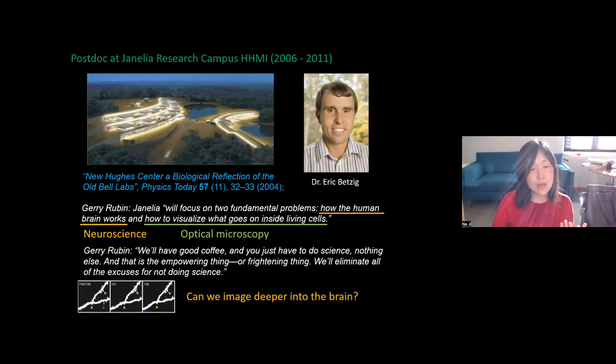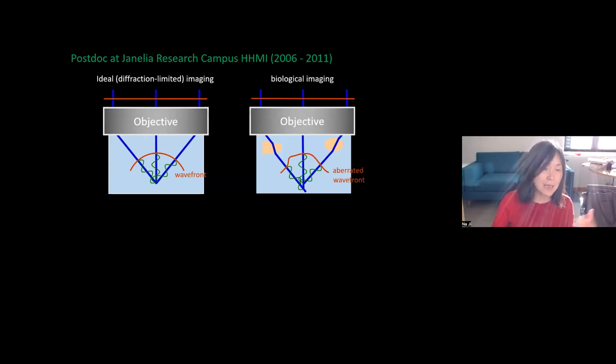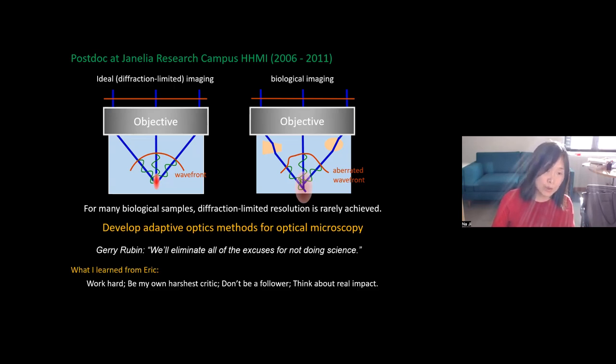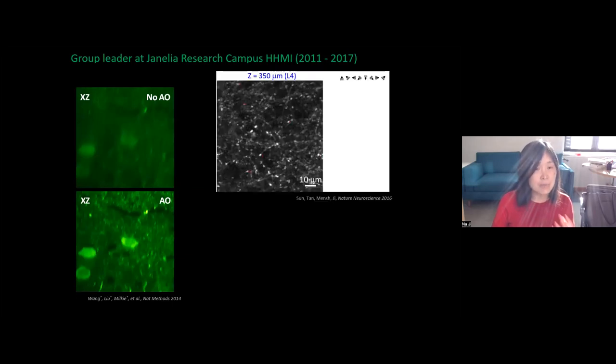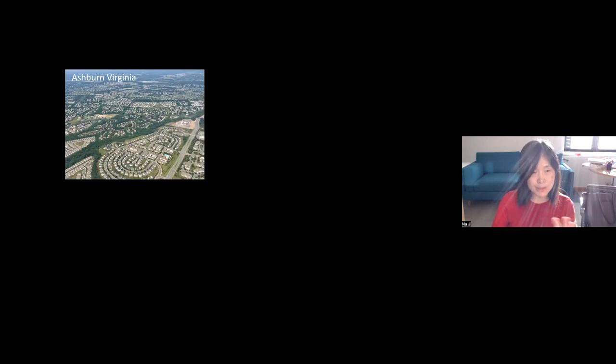We decided to address this problem of not being able to see small structures very deeply inside the brain. We wanted to work on being able to image deeper into the brain. The reason, without going into details, is that light gets distorted when you image deeper into biological samples. If we can correct this distortion, then we can image really deep. What we did was develop a technique called adaptive optics for optical microscopy. We had to work very hard, which was great. This is what I learned from Eric: work really hard, be your own harshest critic, don't be a follower, don't just follow what other people do, and finally, think about real impact—what this technique can do for science. I was sufficiently productive that they decided to give me a group leader position where I continued to develop techniques, had some fun discovering biology, and got into other ways of improving imaging performance.